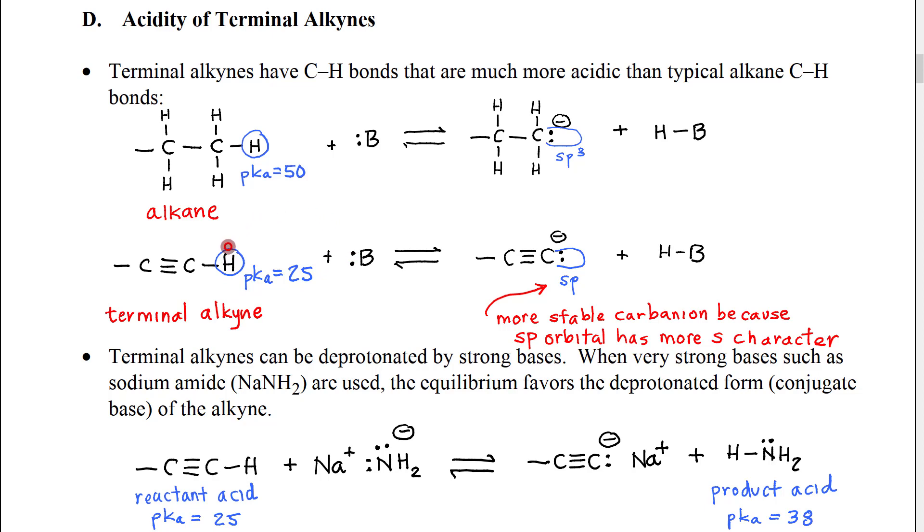a base could remove that hydrogen, deprotonating the alkyne. We would get this species right here, which would have a lone pair on one of the alkyne carbons, would have a negative charge.